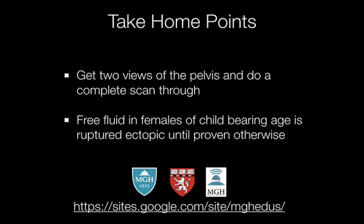This was an awesome case to review. A few key points: clotted blood looks much different than fresh blood or simple free fluid in that it's mixed echogenicity — and now that you know what it looks like, you can identify it without needing a formal ultrasound. Also, a great example of why you need to get two views of the pelvis and do a complete scan, because the short axis view had nothing obvious, but the longitudinal view showed very obvious clotted blood. And a final reminder: free fluid in females of childbearing age is a ruptured ectopic pregnancy until proven otherwise. That's it for this video — thanks for listening, and check back on our website soon for more teaching videos.